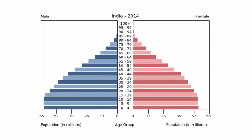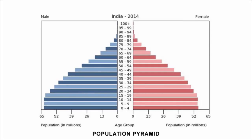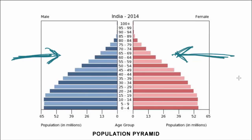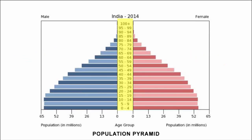Here's a picture of India's population pyramid, which will help outline a few pieces of information to make the age-sex pyramid concept clearer. Bars in blue represent the male population and bars in red represent the female population. On the vertical axis you have age, and on the horizontal axis you have the population in millions.